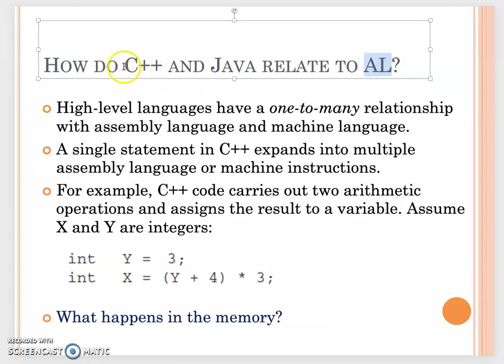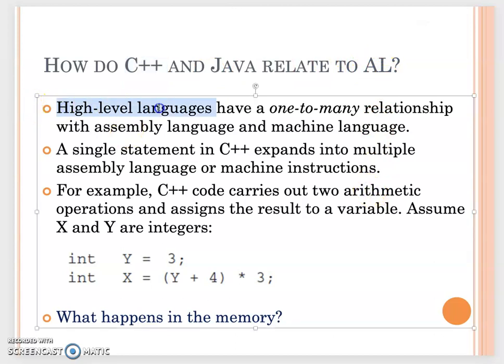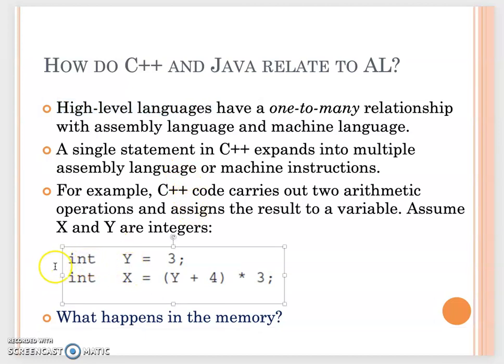I need to show you how C++ code or Java code relates to our assembly language. Before we learned C++, Java, or Python, we call that a high-level language. They have a one-to-many relationship with assembly language. Then assembly language has a one-to-one relationship with machine language. A single statement in C++ will expand into multiple assembly language or machine instructions. For example, can you understand what these two statements do?